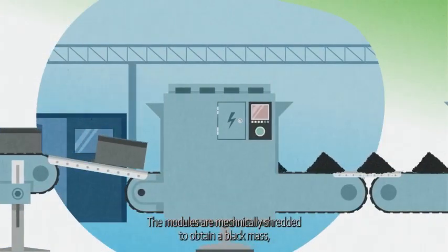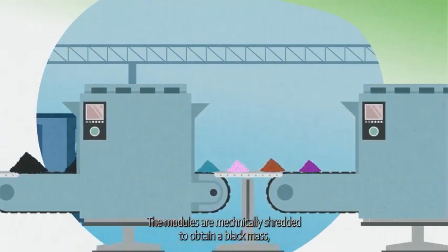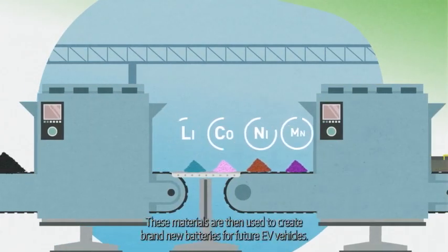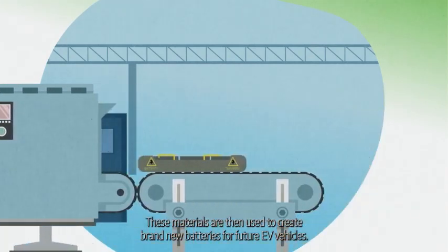The modules are mechanically shredded to obtain a black mass that is then treated to extract the main raw materials. These materials are then used to create brand new batteries for future EV vehicles.